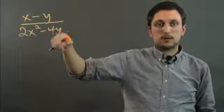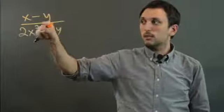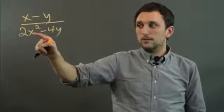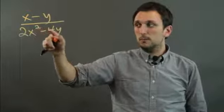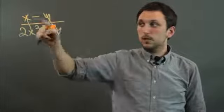If we have a fraction like this, to remove the polynomial from the numerator, we have to be able to simplify it. We have x minus y, and in the denominator we also have x minus y. We just happen to have 2 times x squared minus 4 times y. So the way we simplify is by that.